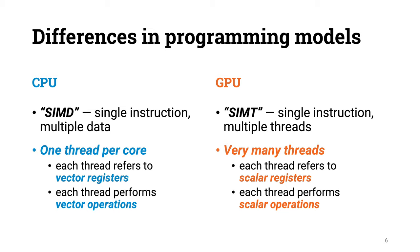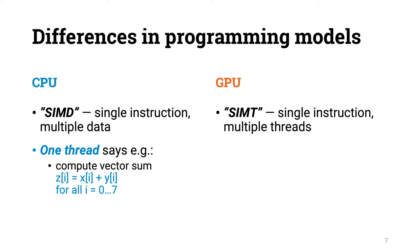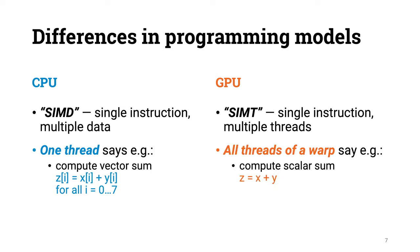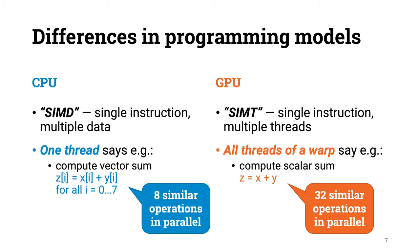On the GPU side, we don't do that. From the programmer's perspective, each thread is just doing plain old scalar operations. But because the threads are organized in warps, scalar operations in GPUs are not that different from vector operations in CPUs. On the CPU side, you had one thread doing 8 similar operations with the help of vector instructions. On the GPU side, you get a warp of threads doing 32 similar operations with the help of scalar instructions. So in both cases, the hardware is really good at doing lots of similar independent operations in parallel, and maybe not so good if you would like to do lots of different things in parallel.